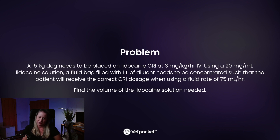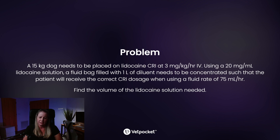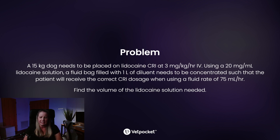The problem for today's video: a 15-kilogram dog needs to be placed on lidocaine CRI at 3 milligrams per kilogram per hour IV. Using a 20 milligrams per milliliter lidocaine solution, a fluid bag filled with one liter of diluent needs to be concentrated such that the patient will receive the correct CRI dosage when using a fluid rate of 75 milliliters per hour. Your job is to find the volume of the lidocaine solution needed.